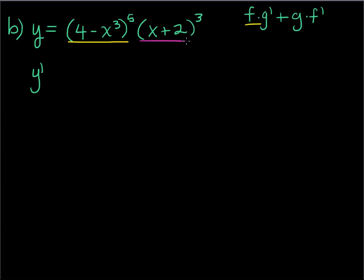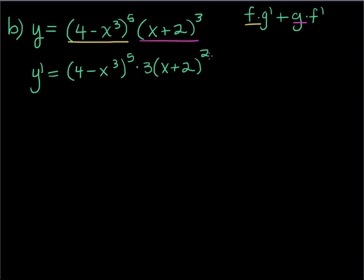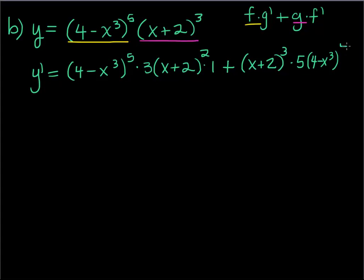The product rule says: leave the first, multiply by the derivative of the second, plus leave the second, multiply by the derivative of the first. So I leave 4 minus x cubed to the 5th times the derivative of x plus 2 cubed — general power rule: bring the 3 down, take one away, multiply by the derivative of the inside, which is 1. Plus, leave x plus 2 cubed times the derivative of the first — bring the 5 down, leave the inside, take one away, times negative 3x squared.